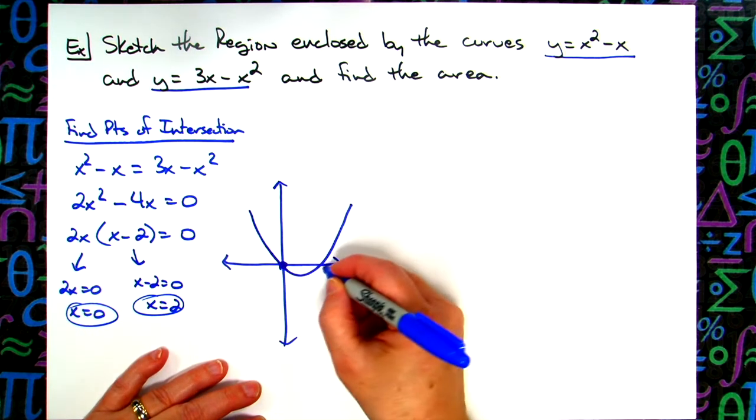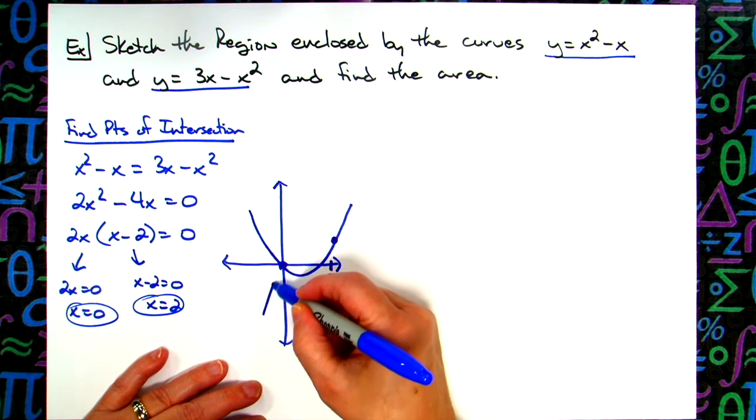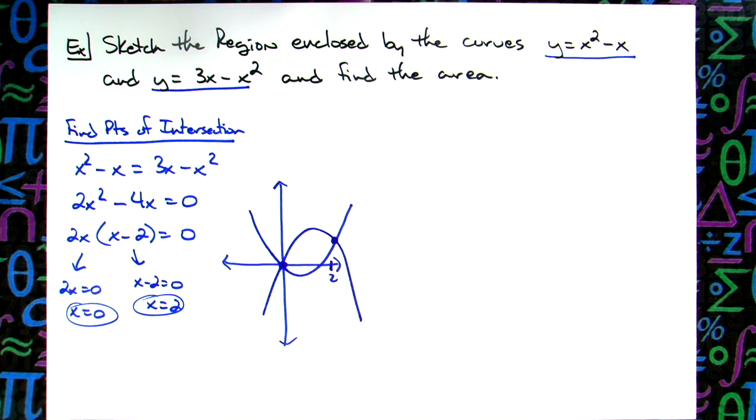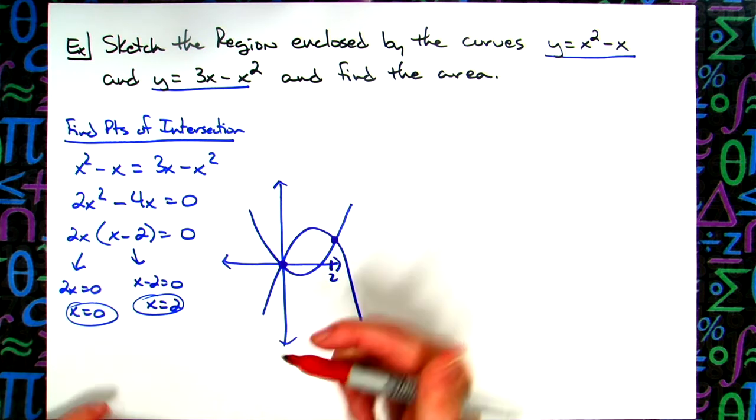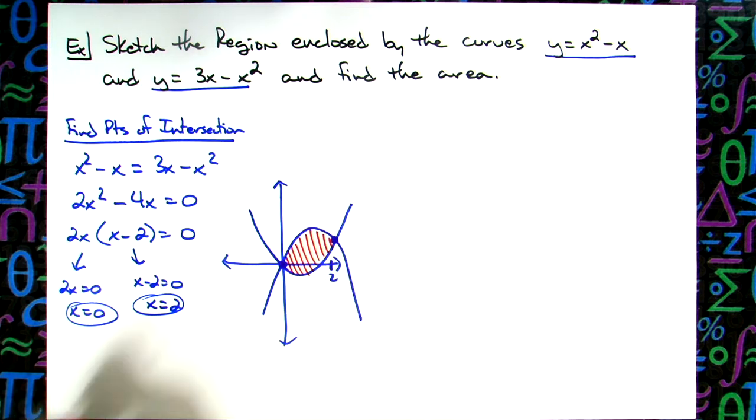If we say that, let's say 2 is right about here, then that means my upside down parabola basically is going to look something like that. I've got one right side up and I've got one upside down. Intersection points here are at 0 and x equals 2. The region then I'm trying to calculate the area of is this region in between the two curves.